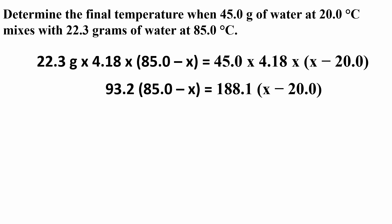Solving, we get 93.2 times (85.0 minus x) equals 188.1 times (x minus 20). 7922 minus 93.2x equals 188.1x minus 3762.